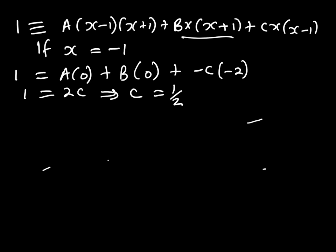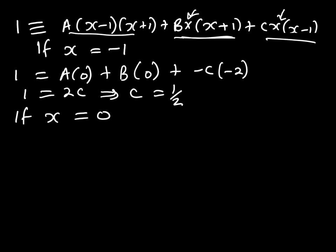Now we can expand the brackets or substitute x equals 0 to find A, because substituting x equals 0 kills the B and C terms. If x equals 0, I have 1 equals A times negative 1 times positive 1, which is minus A. This means that A is negative 1.